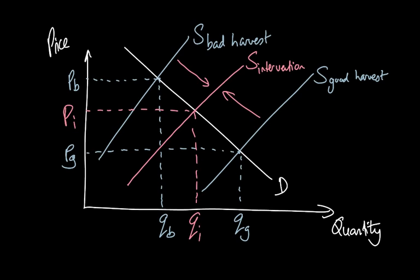In reality, it's not normally quite so perfect as this. What normally happens in the real world is that the government will set intermediate limits like this, and they will intervene if the prices go outside of those points. So this would be the lower intervention, and this would be the upper intervention.